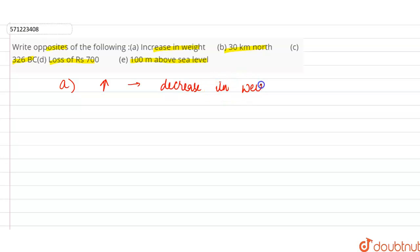Now part B is 30 kilometer north. 30 kilometer north means this is the diagram. So if this is north, this is south, and this is east, this is west. The opposite of north is south, so the opposite of 30 kilometer north means 30 kilometer south.